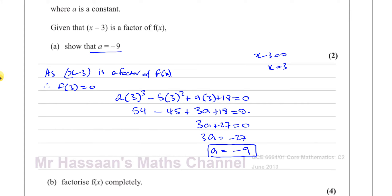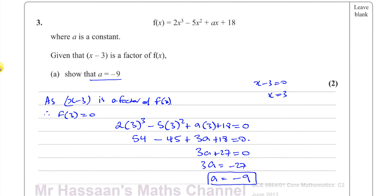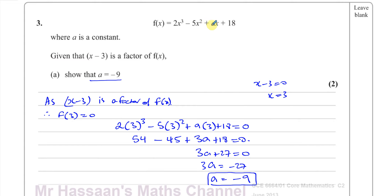Part B says: factorize f(x) completely. Now f(x) is 2x cubed minus 5x squared minus 9x plus 18, using A equals negative 9. Even if you couldn't show part A, you'd know A is negative 9 and could attempt part B. This is something important to learn from these exams — sometimes they give you a value, and you can use it in subsequent parts even if you didn't know how to show it. Don't give up the whole question just because you can't do one part.